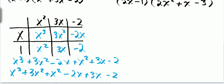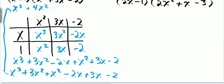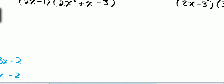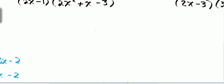And then minus 2. This simplifies to 4x squared plus x minus 2. So these are just a little bigger but just as simple — same concept.